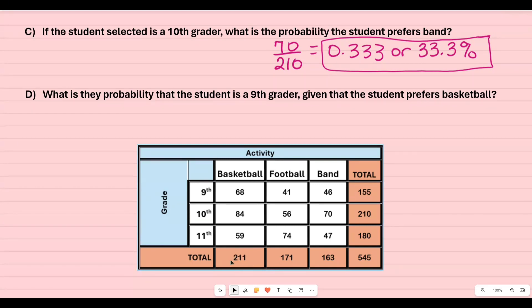Out of those 211 students what's the probability that the student is a ninth grader? I'm looking under basketball and ninth grader where they meet and so there's 68 students out of 211.